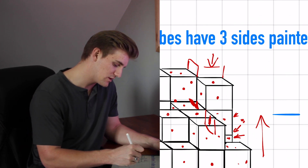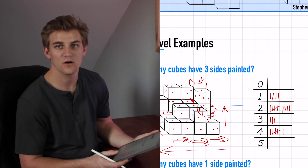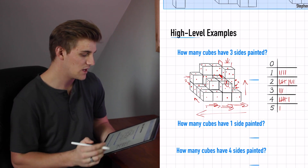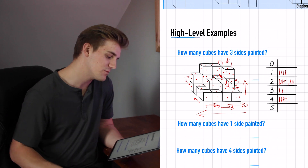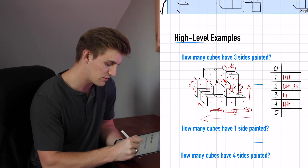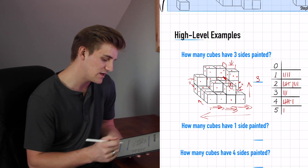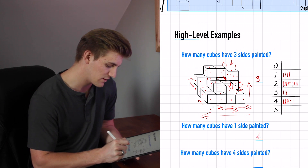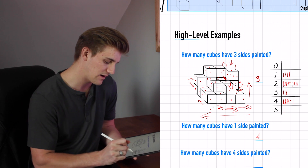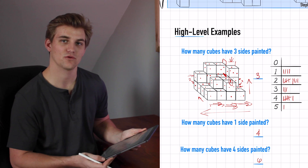Now we go and answer the three questions for this figure. First: how many cubes have three sides painted? Our table shows three tick marks — answer is three. Second: how many cubes have one side painted? Table says four — answer is four. Third: how many cubes have four sides painted? Table says six — answer is six. That is our first high-level example.